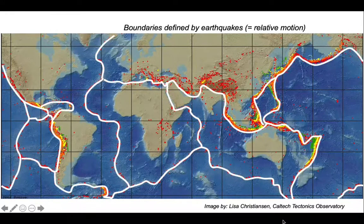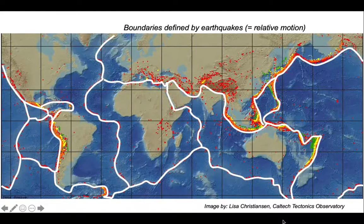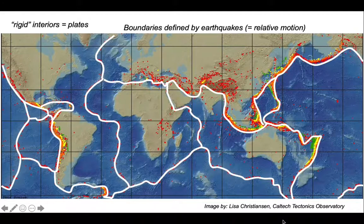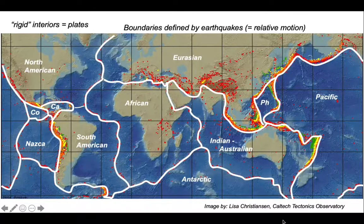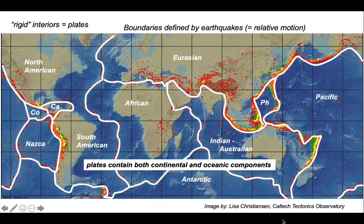So let's join the dots — these are the tectonic plates. The interiors show relatively few earthquakes, so they are classically viewed as rigid. Here are the names. Look at the distribution of ocean and continents: plates can contain both continental and oceanic components, and almost all the plates do indeed contain both.